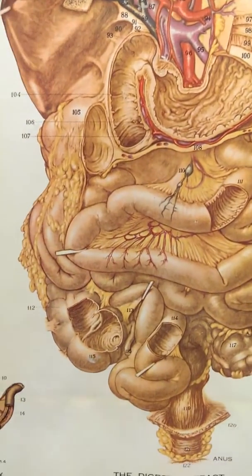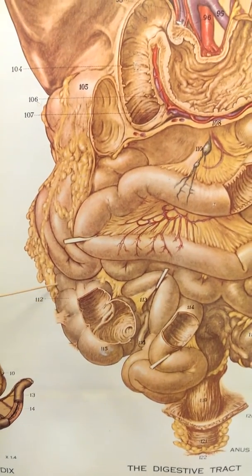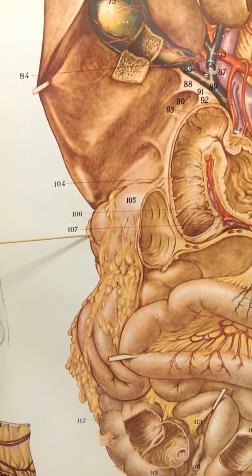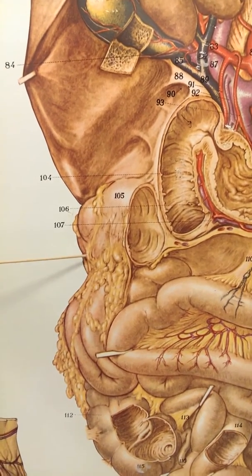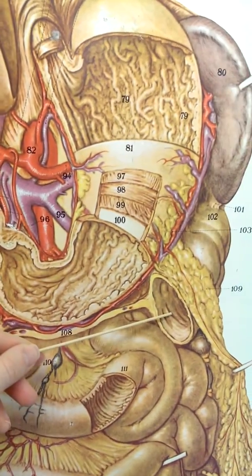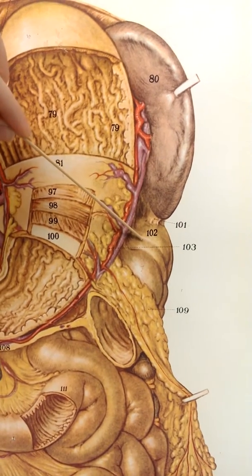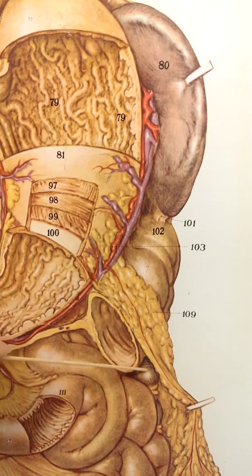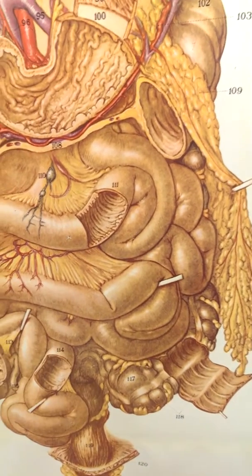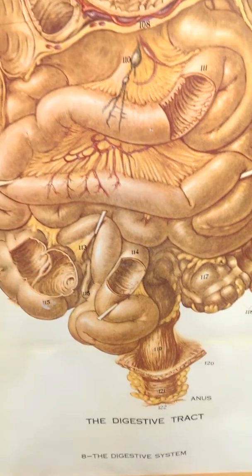Returning to the small intestine, I can see where the ileum connects to the cecum, the first part of the large intestine, and the beginning of the ascending colon, which passes posterior to the small intestines up to the right colic flexure or hepatic flexure. There it makes a 90-degree turn into the transverse colon, which has been cut open. Over on the other side is the left colic flexure or splenic flexure, where it turns down the descending colon, which sits posterior to the small intestines. The S-shaped sigmoid colon leads into the rectum and finally the anus.